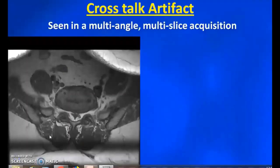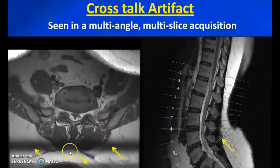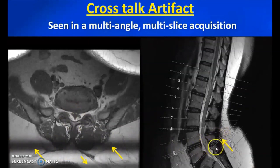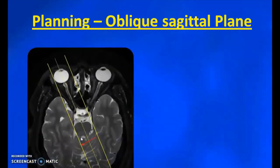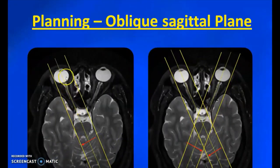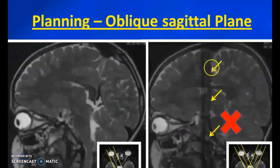Another common artifact is the cross-talk artifact seen in multi-angle and multi-slice acquisition. These artifacts appear as black bands seen opposed to the spinal cord where the axial sections overlap one another. To remedy this, reduce the angulation or separately plan for those particular slices to get an artifact-free image. This cross-talk artifact also happens in oblique planning of the orbit — if you plan both orbits in a single sequence, you will get this type of artifact.